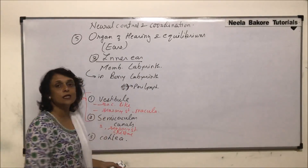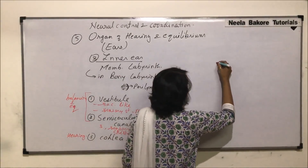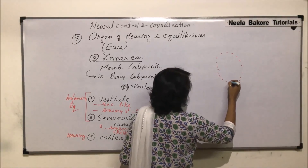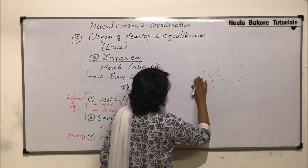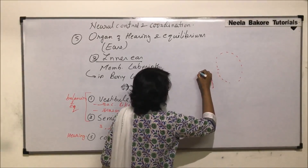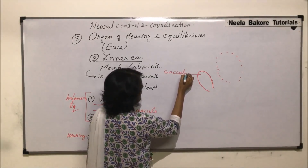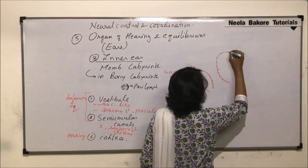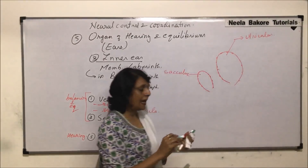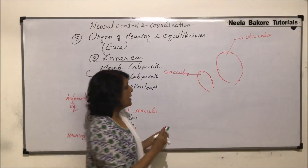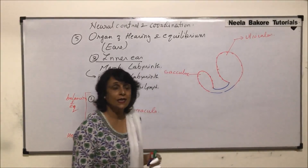Now let us talk about the vestibule. As we said, there are two sac-like structures: a bigger one which is called the utriculus and a smaller one which is called the sacculus. The sacculus is the smaller one and the utriculus is the bigger one.